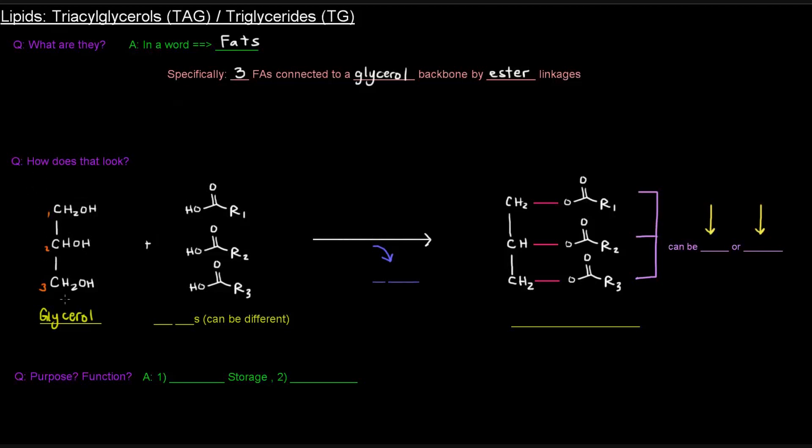And we're going to take glycerol and three fatty acids, which I've drawn here. So three fatty acids that are drawn here. And our groups are labeled as one, two, and three because they could be different. They don't have to be, but they can be.